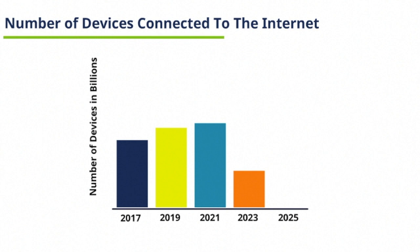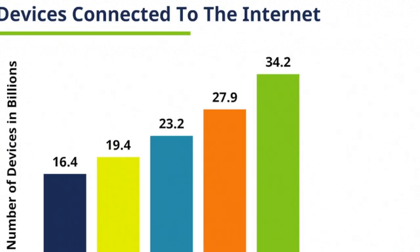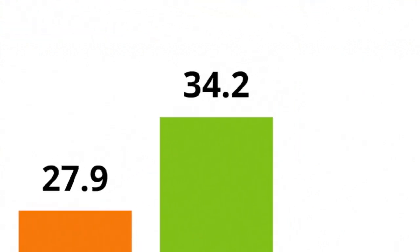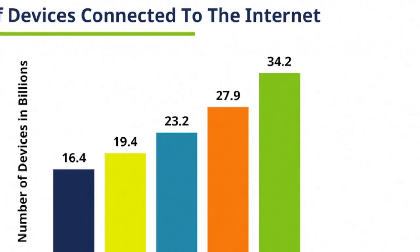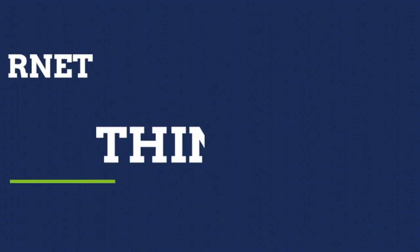It is estimated that the number of devices connected to the internet will increase to more than 34 billion by the year 2025. This interconnection of billions of autonomous devices to the internet is called the internet of things.